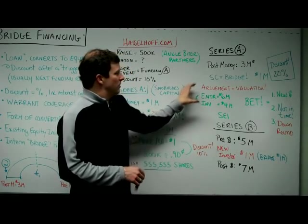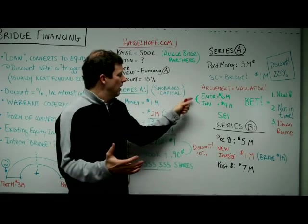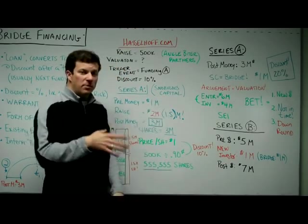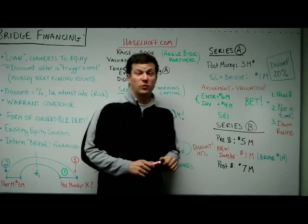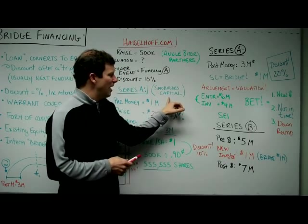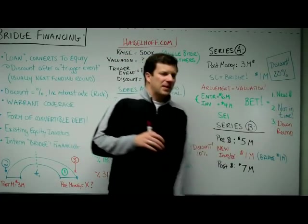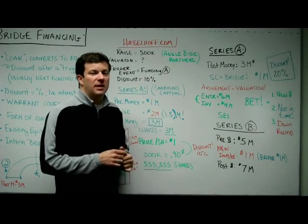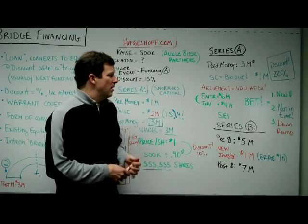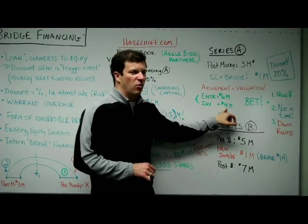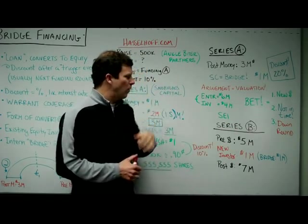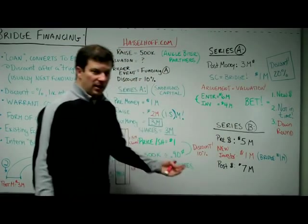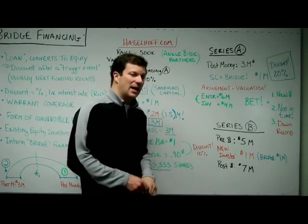The point is that Snobulus Capital agrees to give the company $1M to keep operating. Essentially, there's a bet: the entrepreneur is betting they can go raise money in the future. The entrepreneur says, 'Trust me, I just need one million more dollars to tide me over six more months so I can finish fundraising.' Snobulus Capital says, 'We're not sure you're going to raise that money in time,' so they put in a trigger event at a specified point in time that allows them to choose how they convert. The entrepreneur thinks the company is worth $6M; the investor thinks it's worth about $4M. The entrepreneur goes out to raise money, aiming for a pre-money valuation of $5M from their Series B investor.